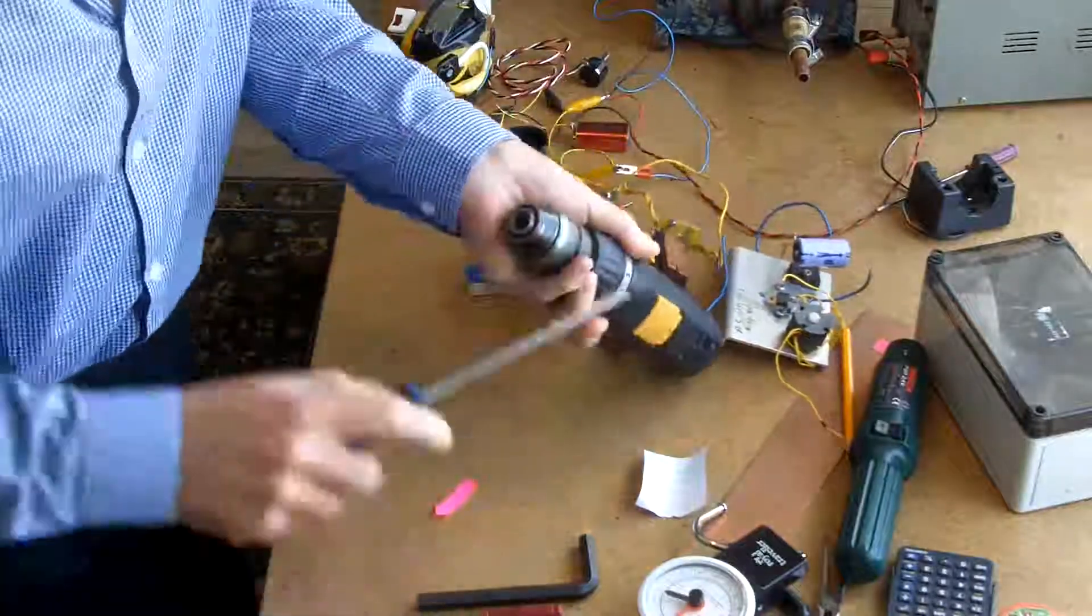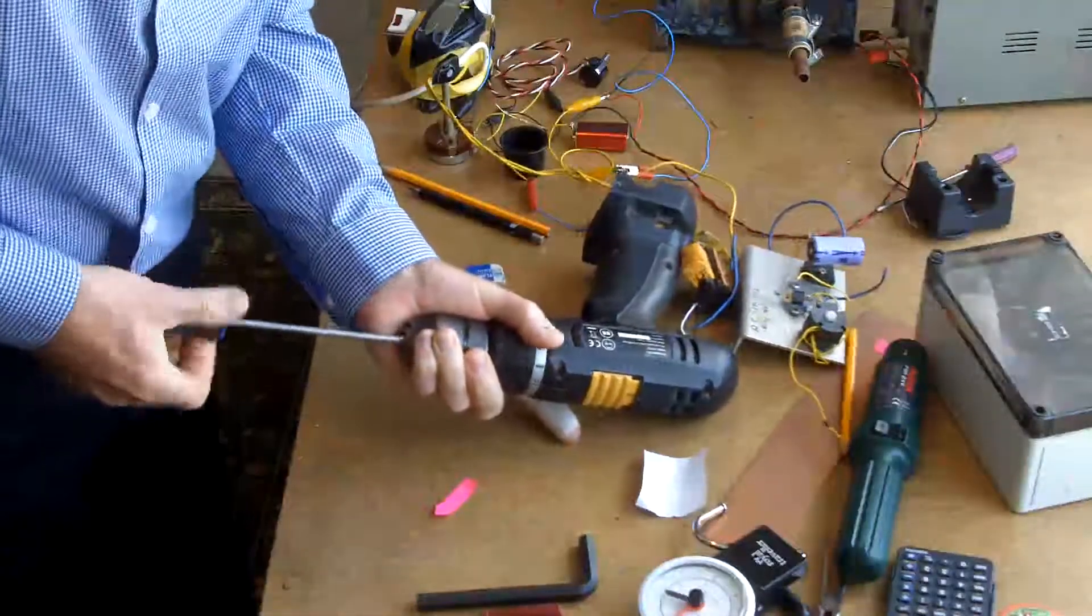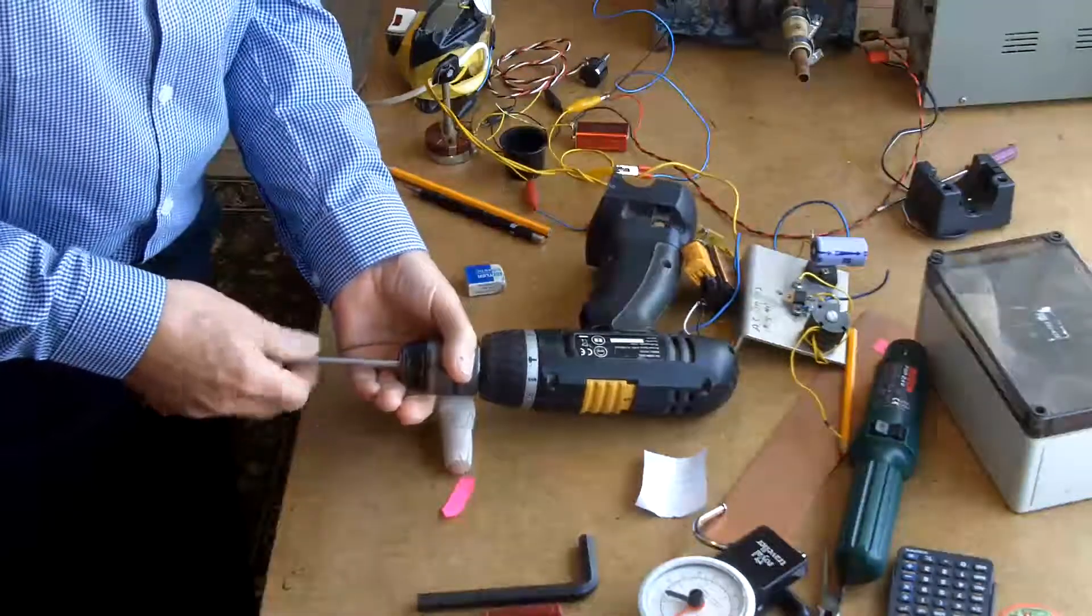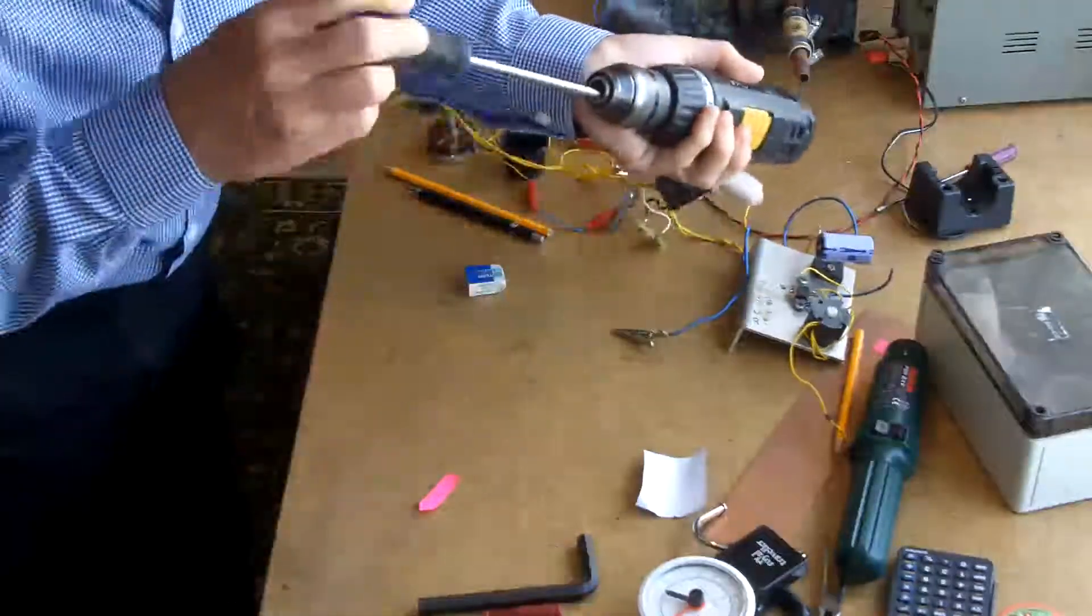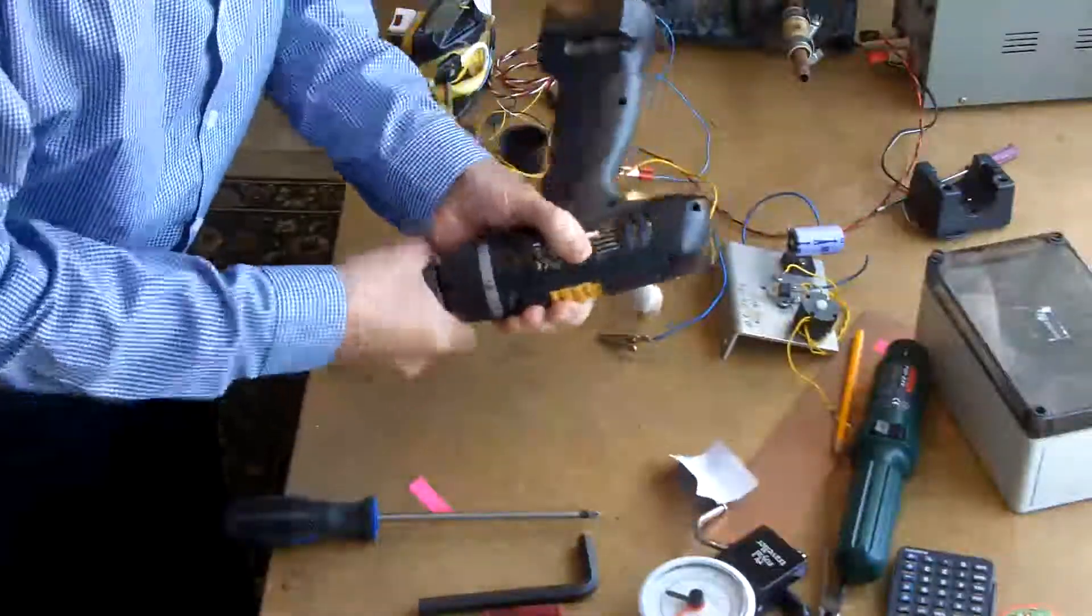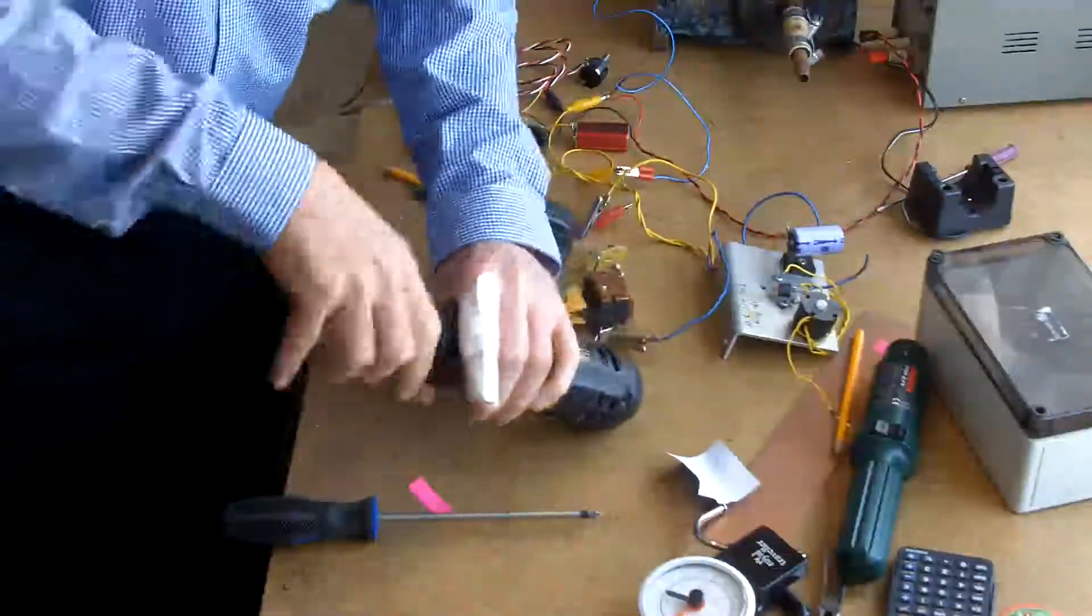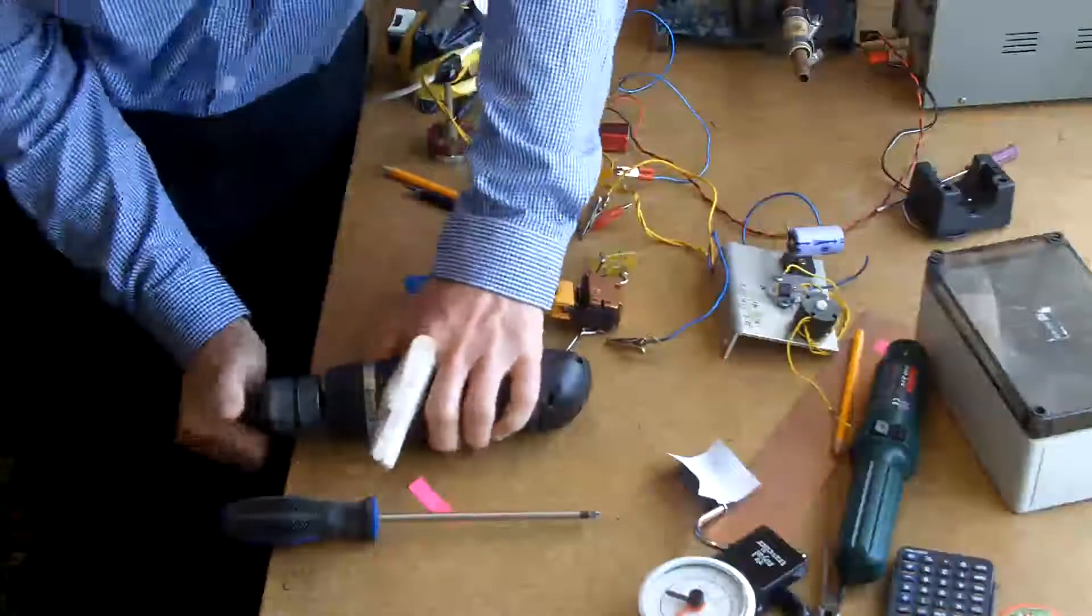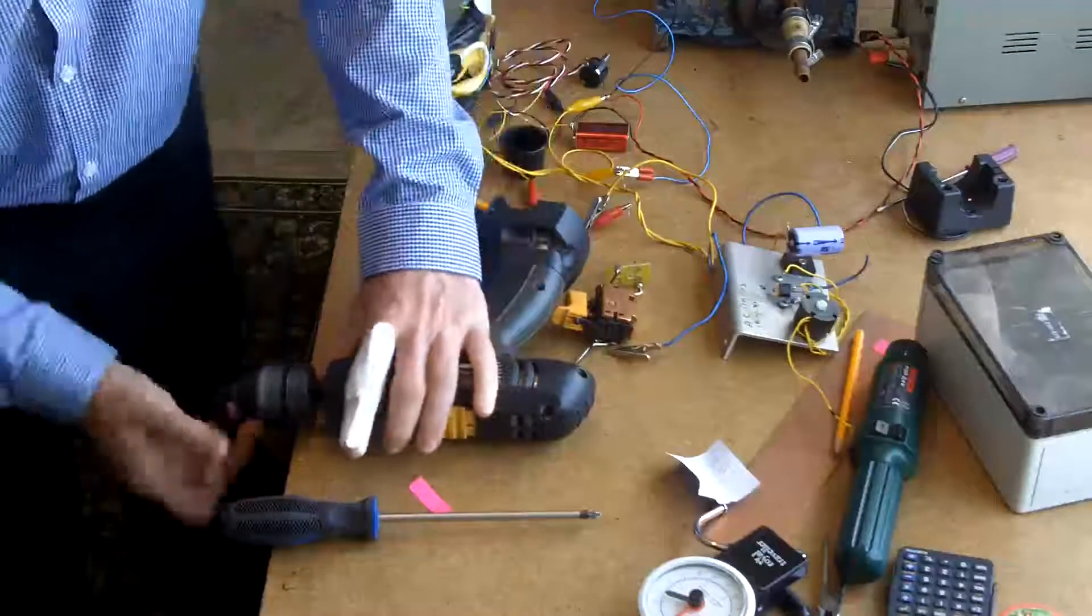To get the chuck off, there's a screw in here which is a left-hand thread, so you do it as if you were doing it up to take it out. And then it unscrews the normal way, anti-clockwise.